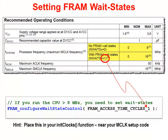One last item for your FRAM initialization routine is to set the wait states. Per the FR5969 data sheet, if you're running more than 8 MHz, you need to set the FRAM for one wait state. An example shown here includes a clip from the data sheet as well as the DriverLib function required to set the wait states. But since our labs are only running at 8 MHz, we don't have to worry about the wait state value.